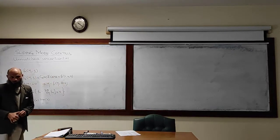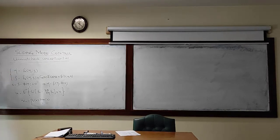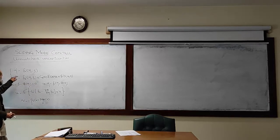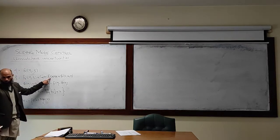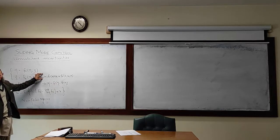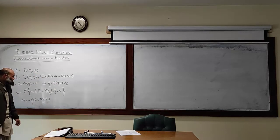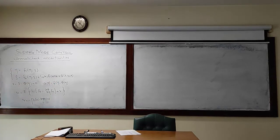In the last lecture we talked about sliding mode control for systems. The dynamics of these systems were given by these equations, and we can transform the system into a particular form by application of state transformation. The assumption was that fa, fb, and e are known. g of x and delta is uncertain — we may or may not know the nominal value of g of x. This uncertainty, which appears in the same channel as the input, is called matched uncertainty.